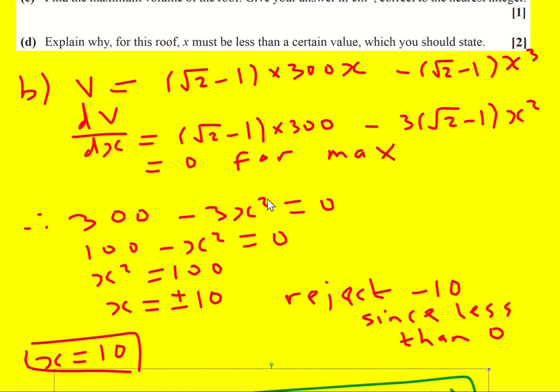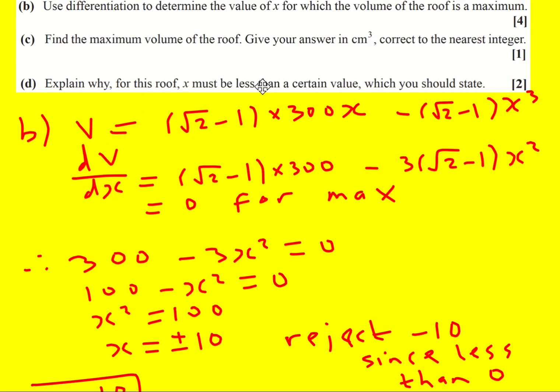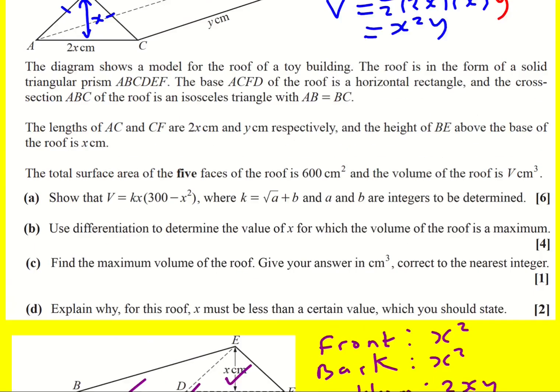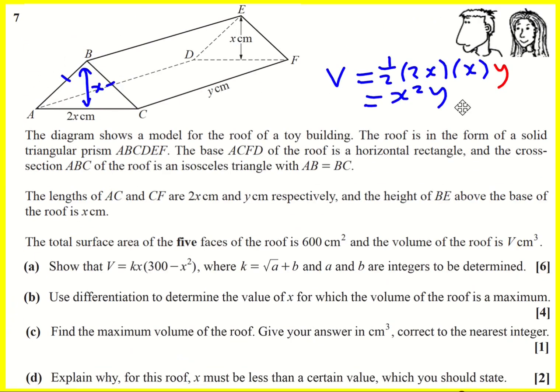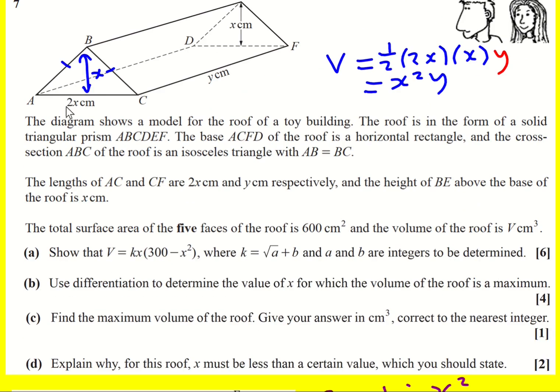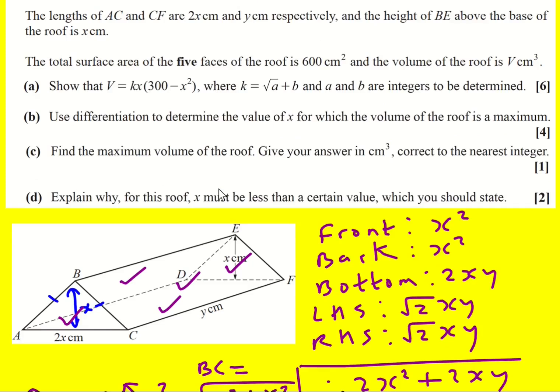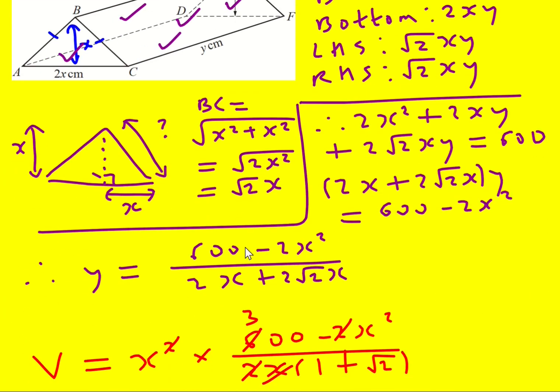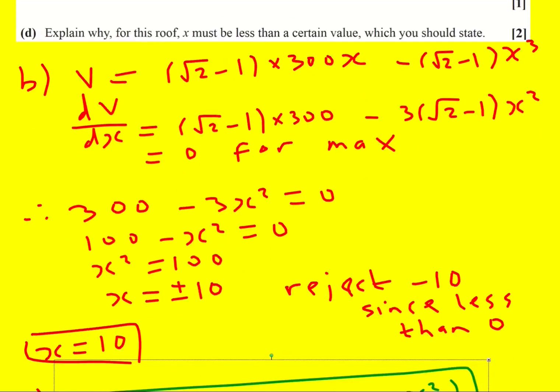Now, very final part of this question. We're asked, why for this roof, x must be less than a certain value which you should state? So we need to look back through this. It doesn't look like it's being restricted here by the volume. You know, x has to be positive, we know, but why does it have to have a maximum value? Well, I think the answer lies here, and it's for the value of y. So y must also be positive, whilst x is always positive, the denominator is going to be positive. This numerator is 600 minus 2x squared. You can see if x is like a million, then this will become negative.